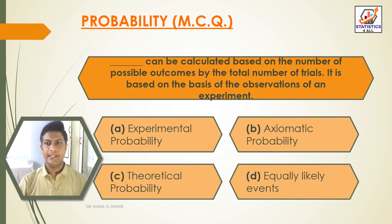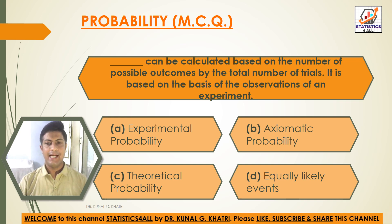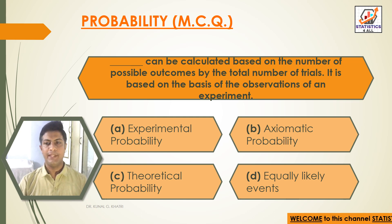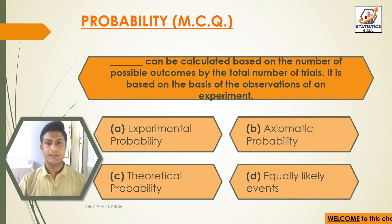Question 2: Dash can be calculated based on the number of possible outcomes by the total number of tries. It is based on the observations of an experiment. Option A: Experimental probability. Option B: Axiomatic probability. Option C: Theoretical probability. Option D: Equally likely events. Answer: Option A — Experimental probability can be calculated based on the number of possible outcomes by the total number of tries; it is based on the observations of an experiment.